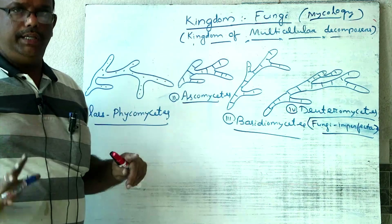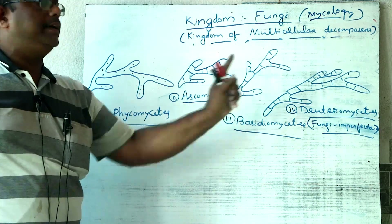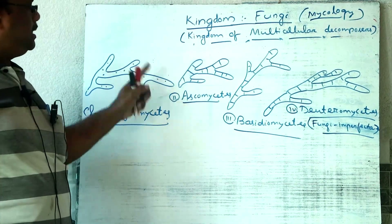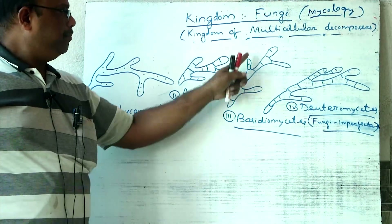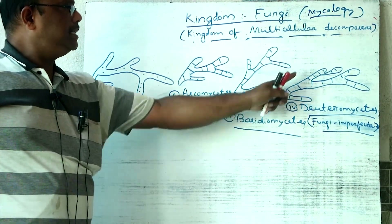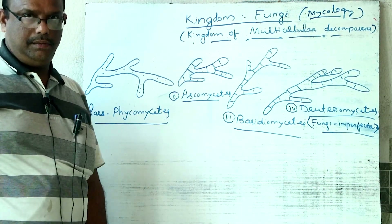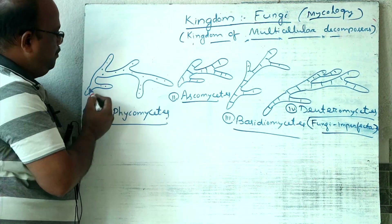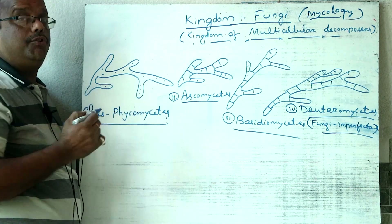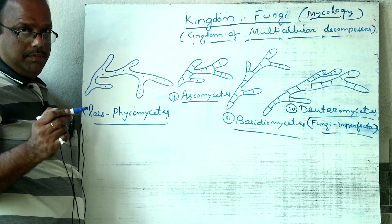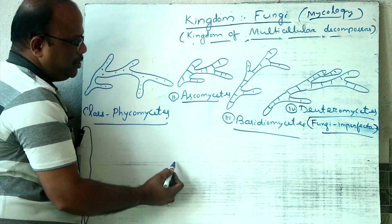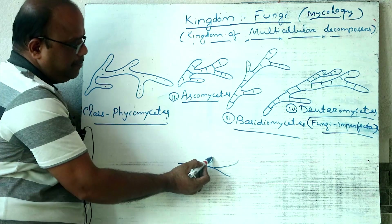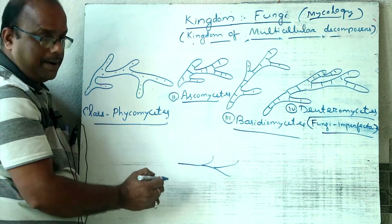All fungi are placed in four different classes: Phycomycetes, Ascomycetes, Basidiomycetes, and Deuteromycetes. The filamentous body of fungi is called mycelium — the somatic body of fungi which is thread-like is called mycelium. Each branch of mycelium is called hypha.